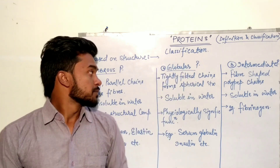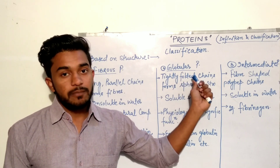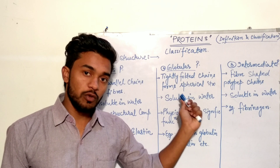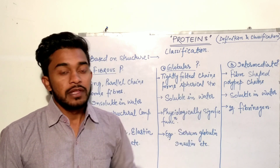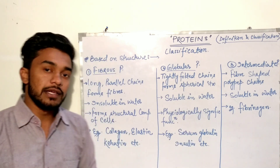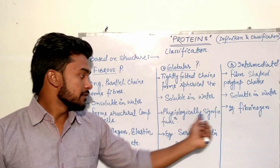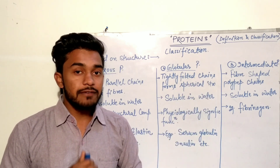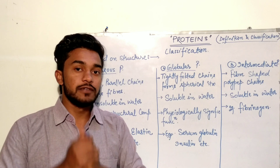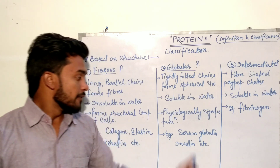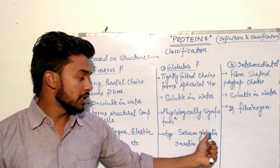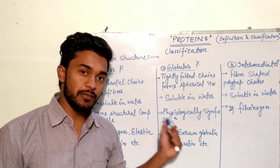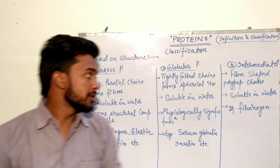Globular proteins are tightly folded polypeptide chains that form spherical structures. They are soluble in water and have physiologically significant functions. Examples include serum globulin and insulin — as we know, insulin is a very important component of our body.